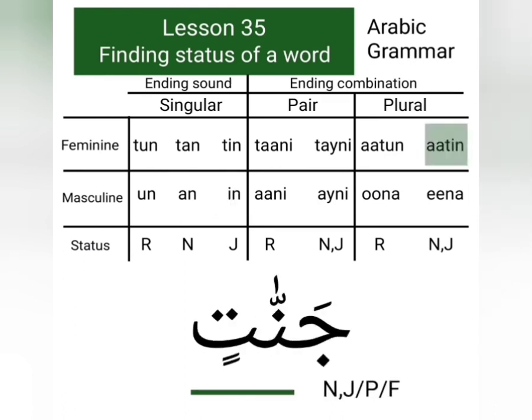Our next example is the word janatin. First of all we see the feminine ending combinations. This word does not have any pure feminine ending combination taani or taini. It does not have the plural ending combination aatun, but it has the plural ending combination aatin. Feminine plural words having ending combination aatin can have the status nasab or they can have the status jar. So with janatin we write nj/p/f — nj means nasab or jar, p means plural, and f means feminine.